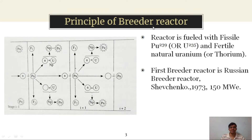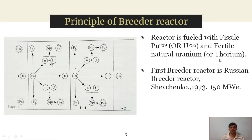Let us see the basic principle behind this breeder reactor. This breeder reactor is fueled with fissile nuclei — either plutonium-239 or uranium-235 — and fertile natural uranium, that is uranium-238, and thorium. Natural uranium and thorium are fertile nuclei which do not undergo any fission reaction, while the nuclei taking part in fission reaction are called fissile nuclei. We can use plutonium-239 or uranium-235 as fissile nuclei, and natural uranium or thorium as fertile nuclei.